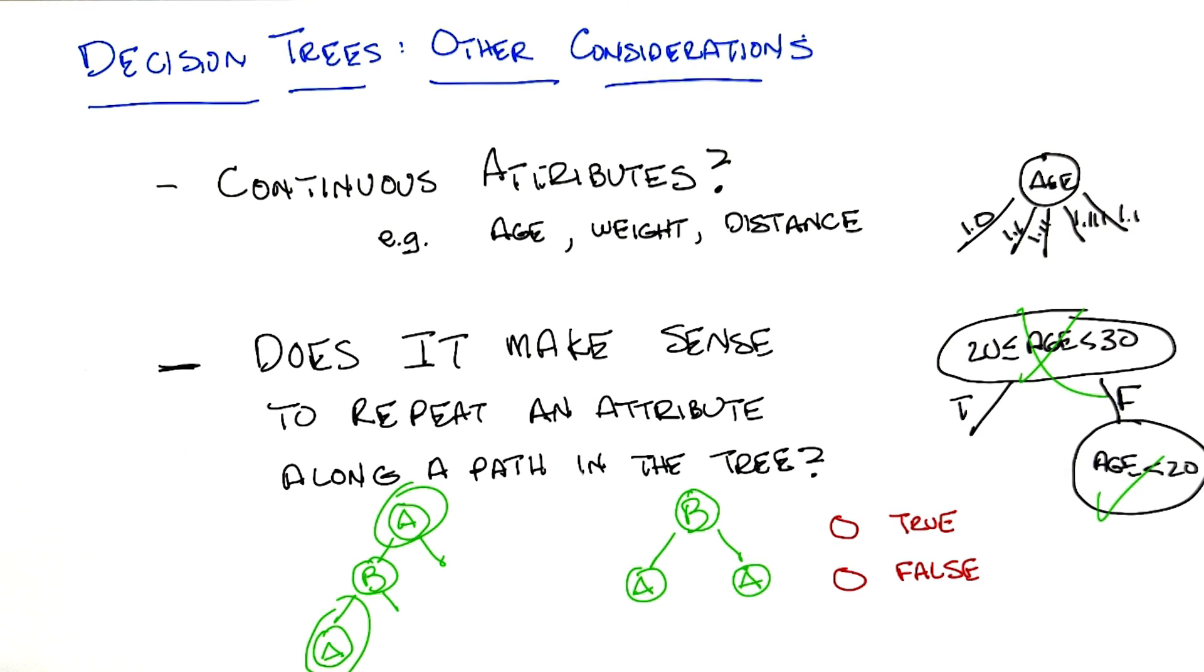So that's exactly right, Michael. So the answer is no, it does not make sense to repeat an attribute along the path of the tree for discrete valued attributes. However, for continuous valued attributes, it does make sense.